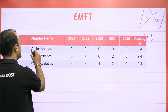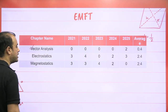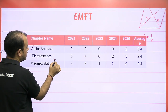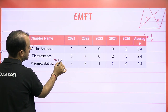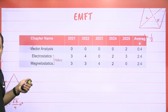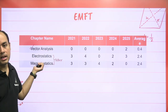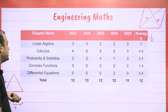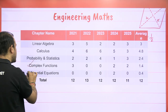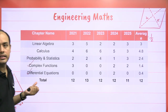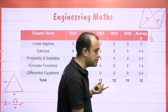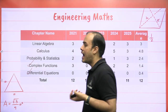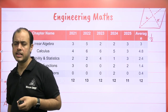In EMFT, you can skip Vector Analysis as it will be covered under Maths. For Waveguide and Antenna, you can skip either of the two — you don't need to cover both. EMFT is a scoring topic. In Mathematics, skip Complex Analysis and Differential Equations and cover only selected parts of Calculus like Maxima-Minima, Increasing-Decreasing Functions, Vector Calculus, and Partial Differentiation.